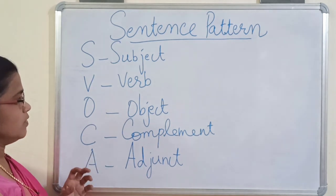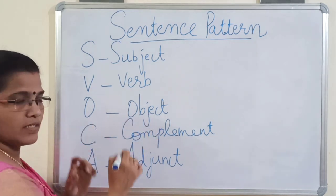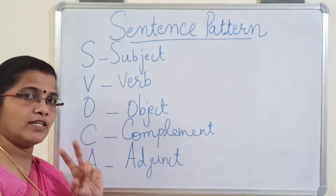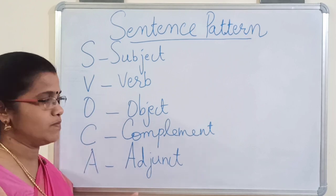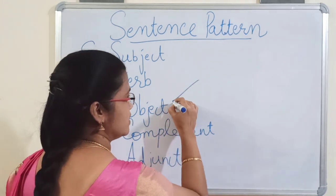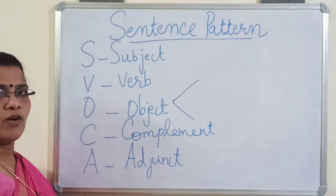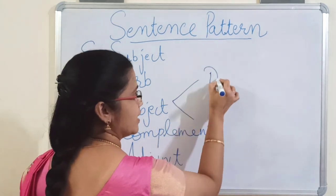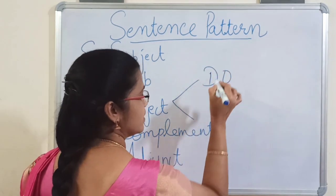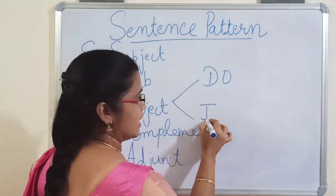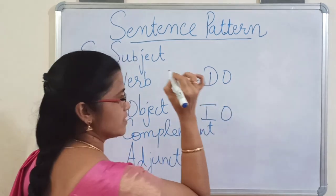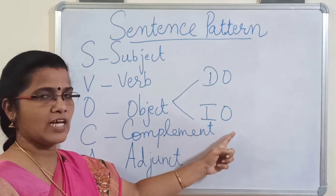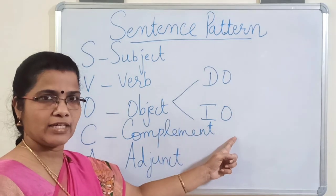When you speak about object, you have to understand that there are two kinds of objects. Objects are of two kinds: one is direct object and the other one is indirect object. DO stands for direct object and IO stands for indirect object.